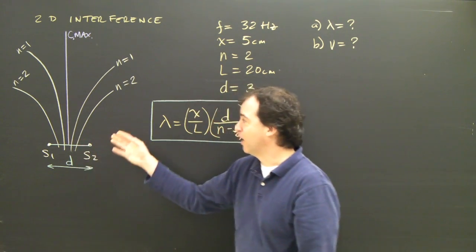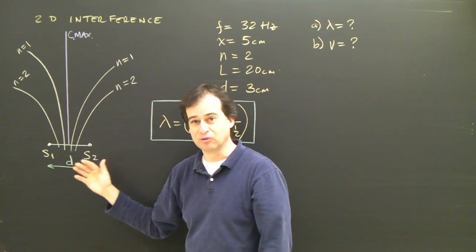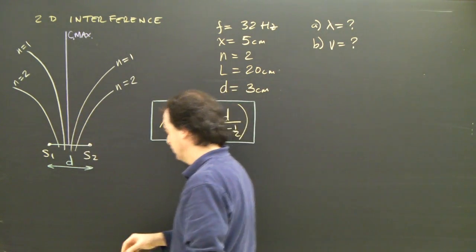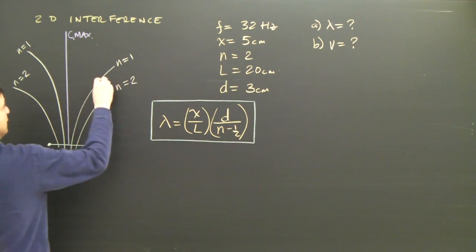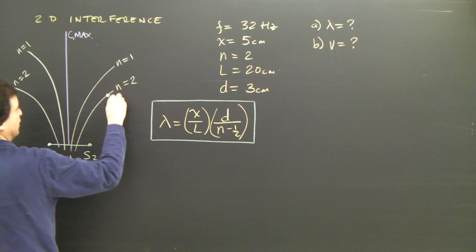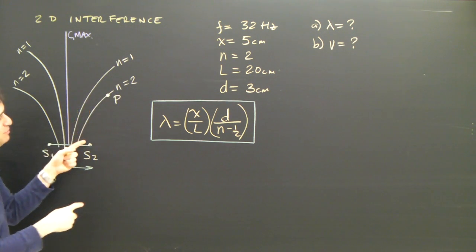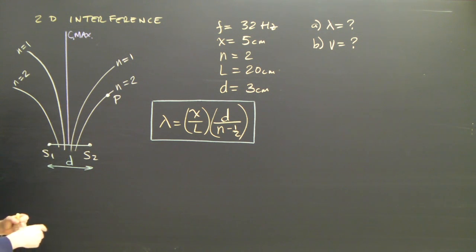But there are other formulas that can be derived from this pattern, and I'm not going to derive them, I'm just going to talk about them. If you look at this pattern, I could pick a point on the pattern, say on the second nodal line, and I could measure PS2 and PS1 and maybe come up with the wavelength that created this pattern.